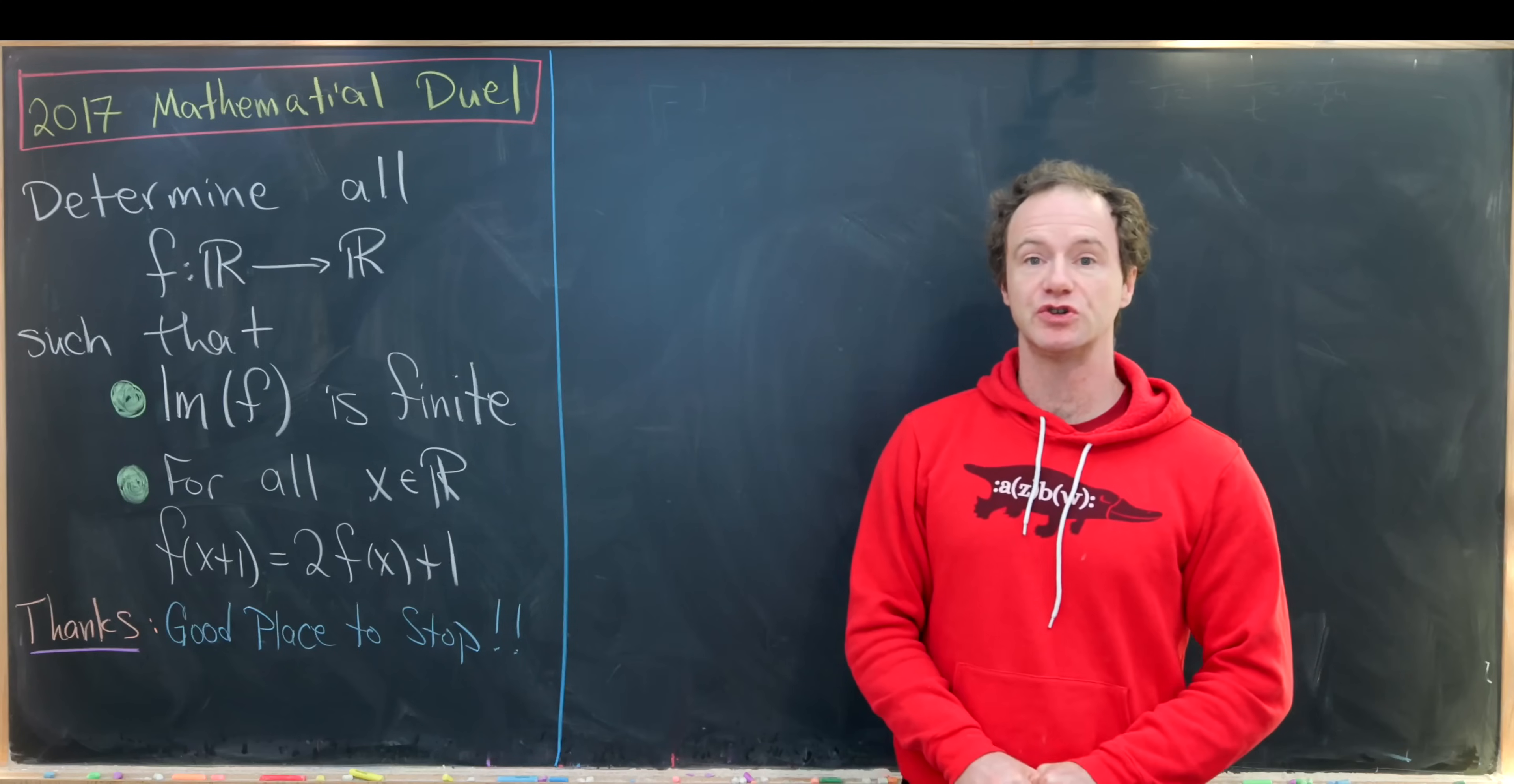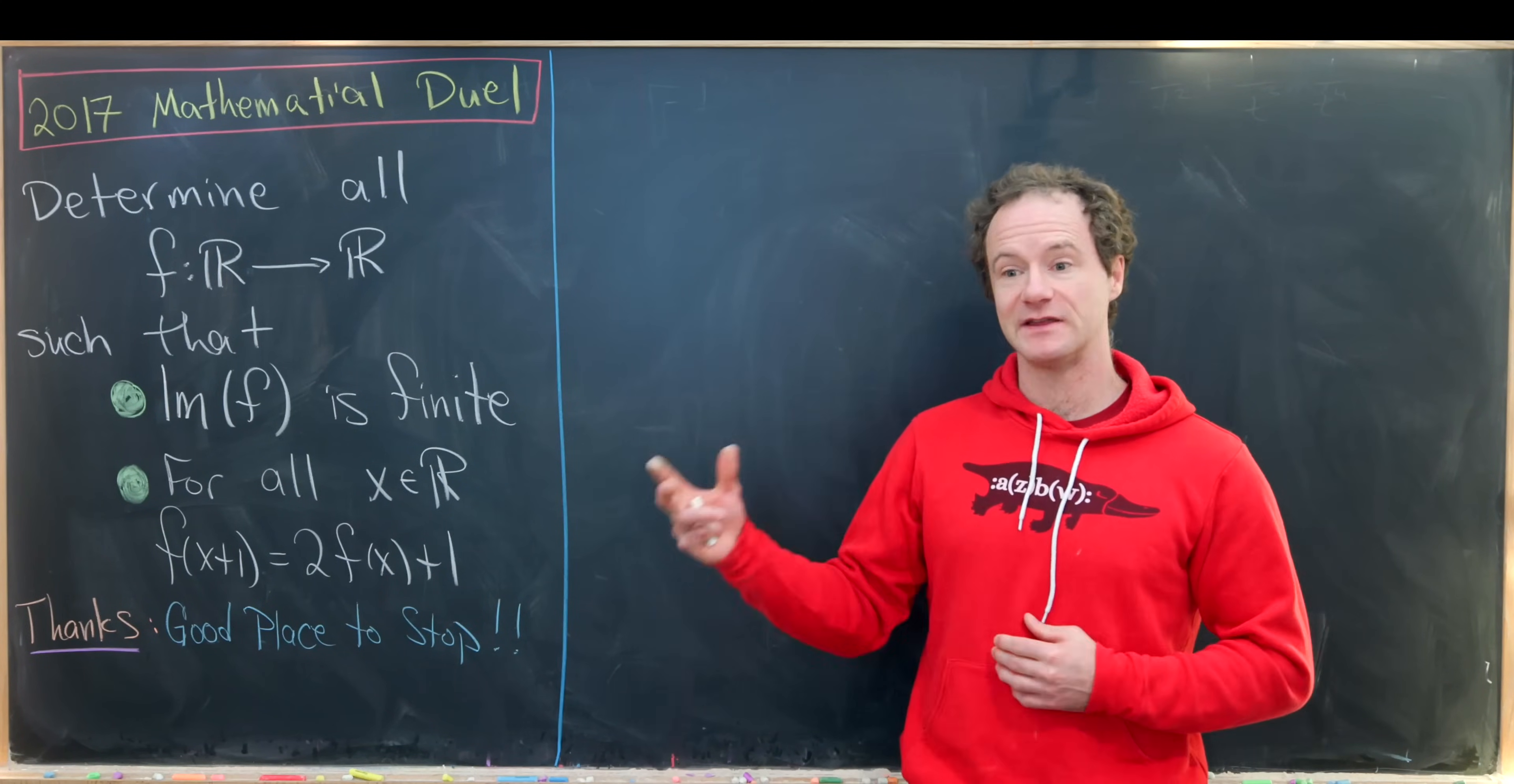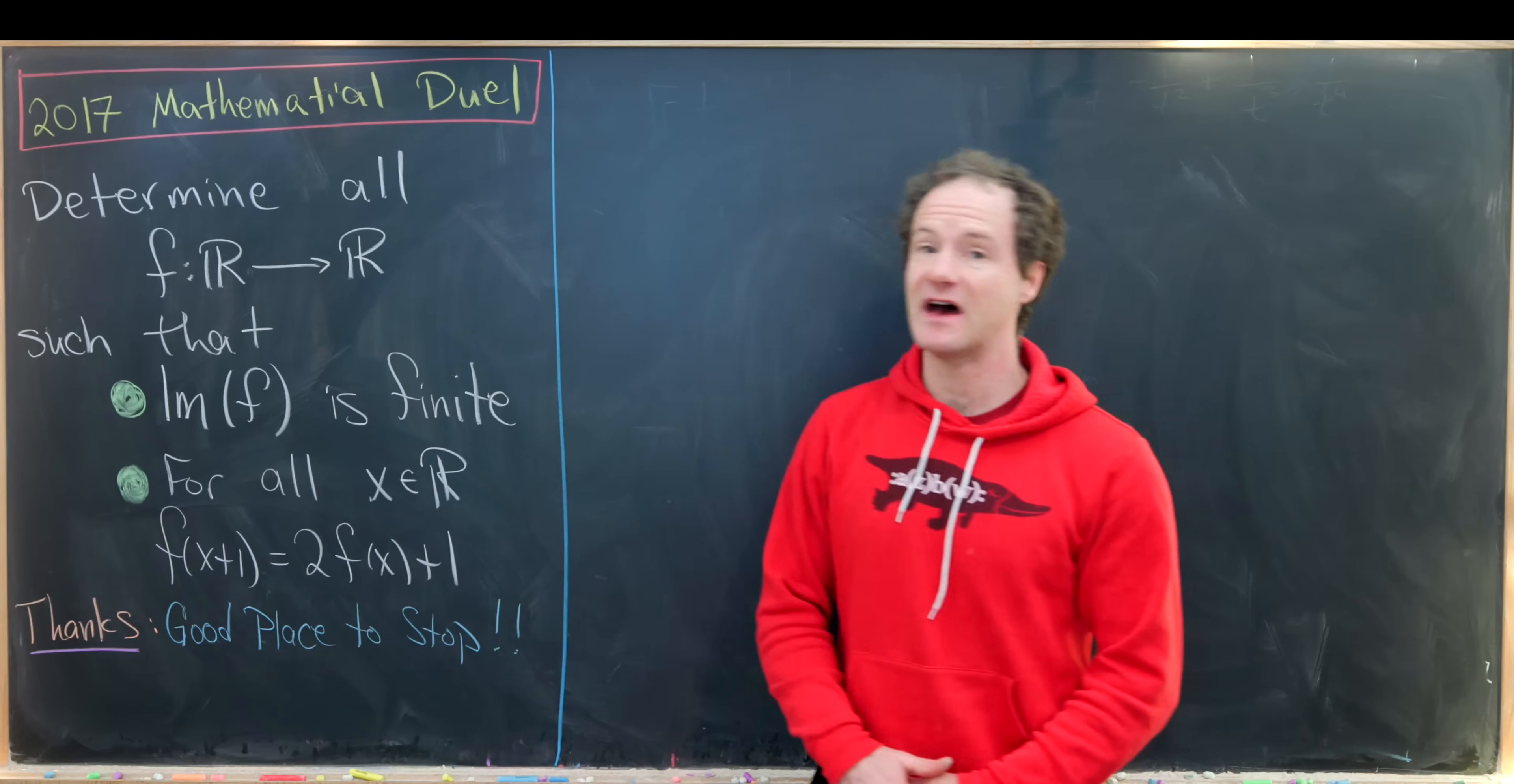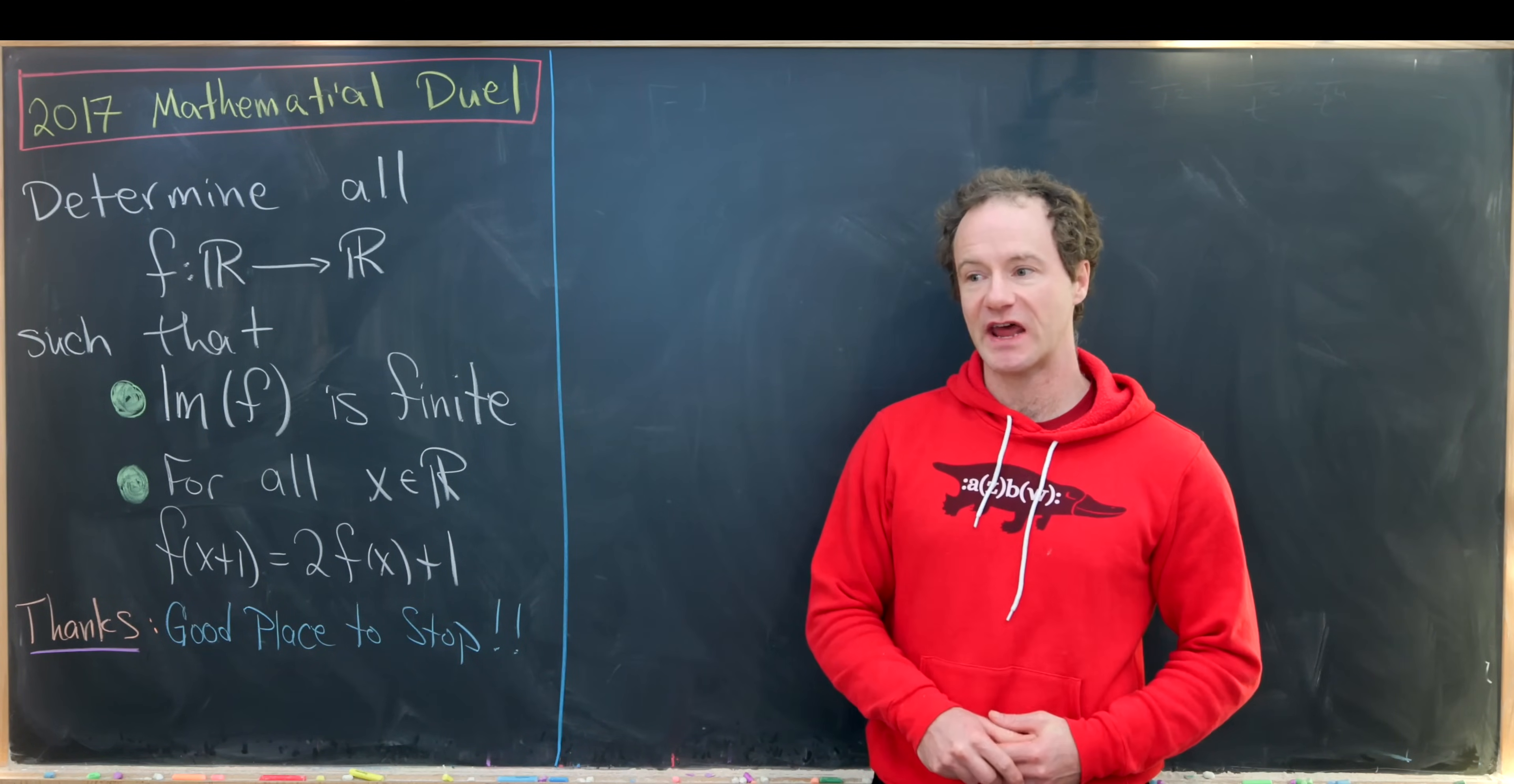functions from R to R, so in other words the inputs are real numbers and the outputs are real numbers satisfying two conditions. First, the image of f is a finite set, so in other words this function f only